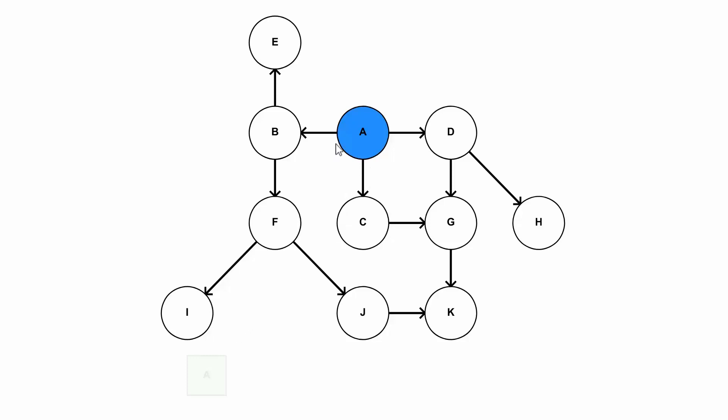But depth first search is very simple. What we're doing is we're running a function on a node. So we're going to start with A. And that function just runs itself on every child in random order. The order doesn't matter.